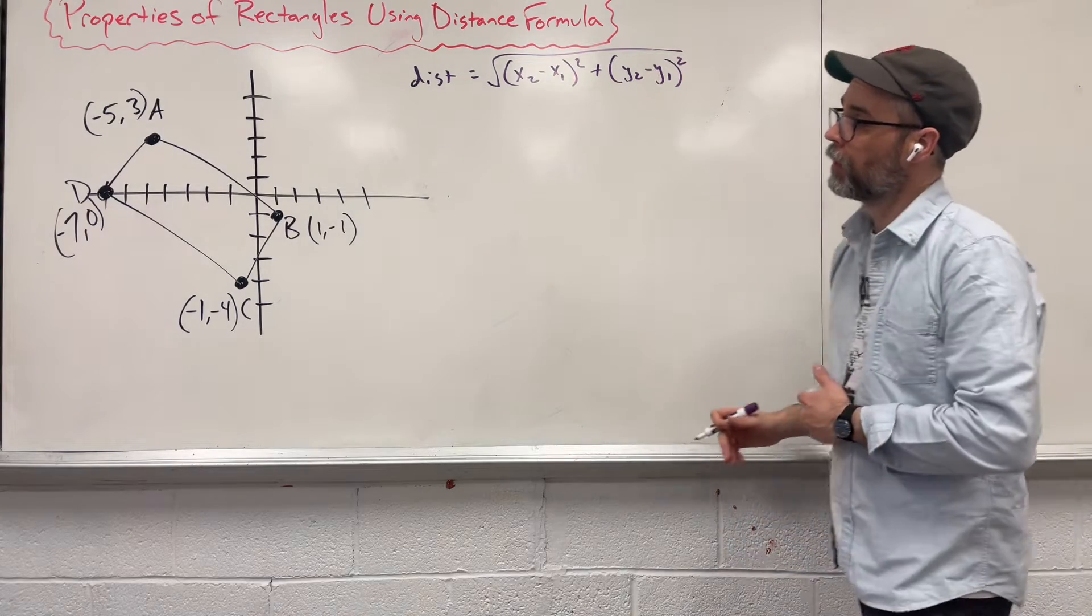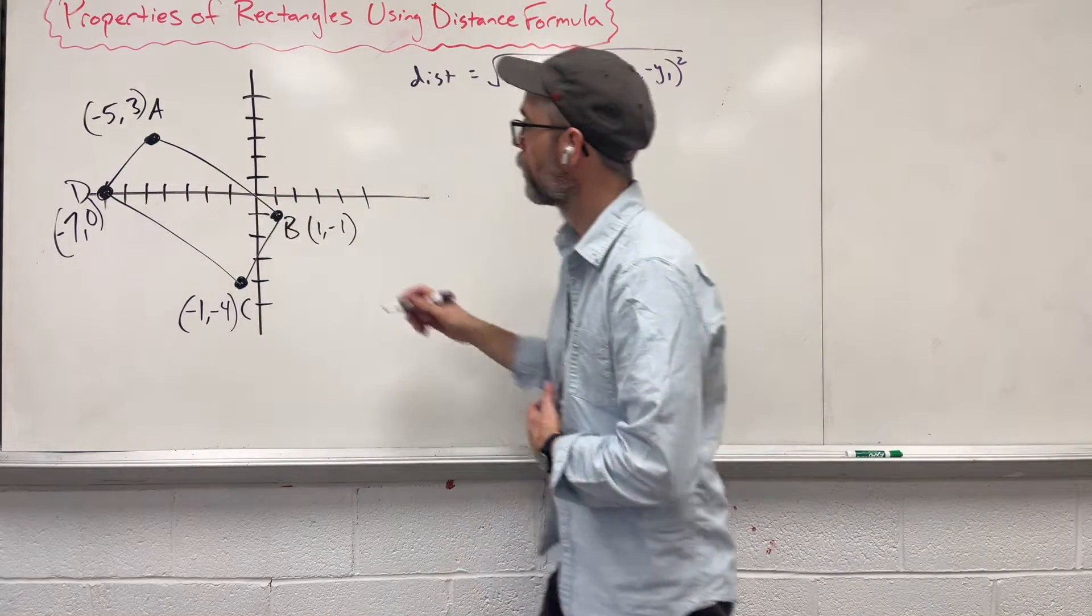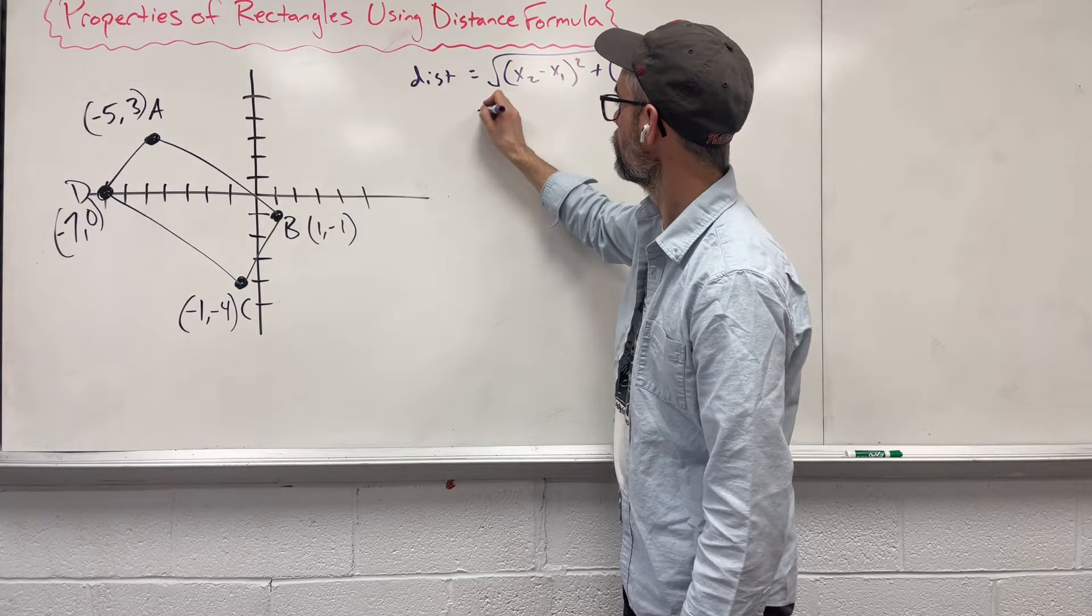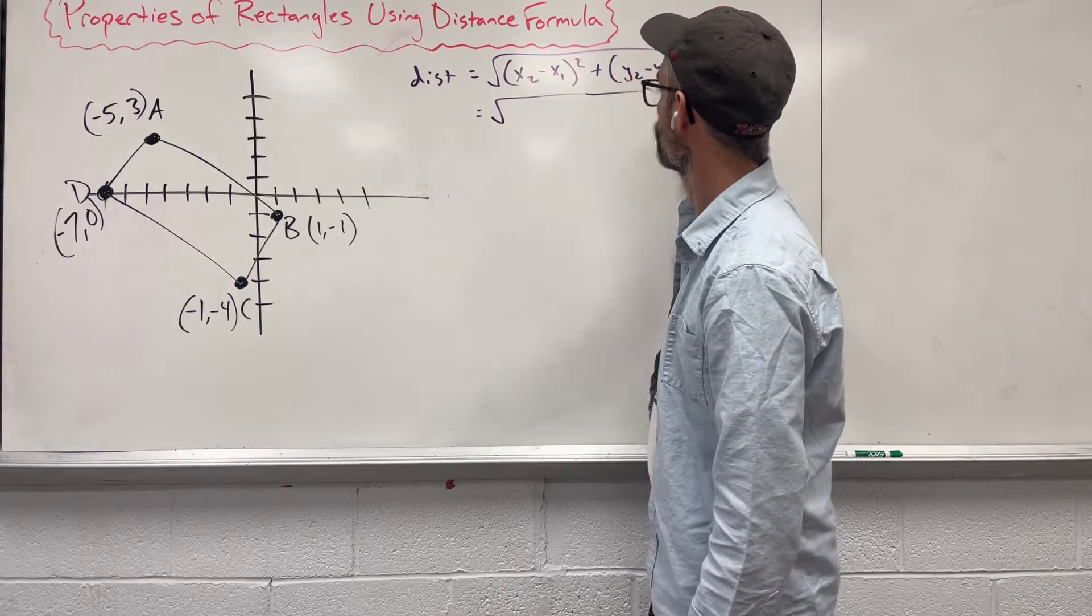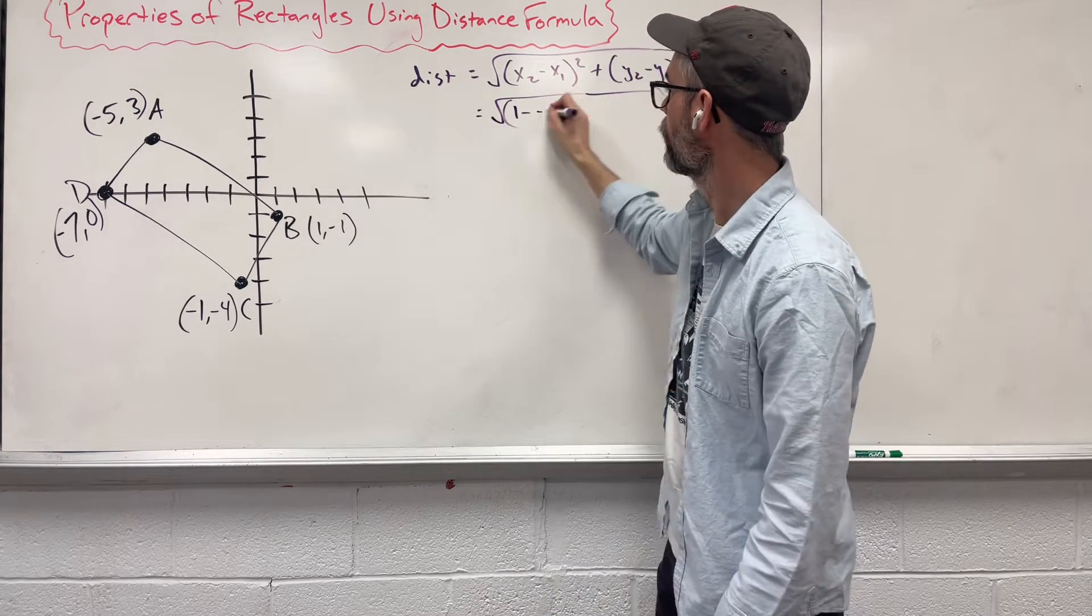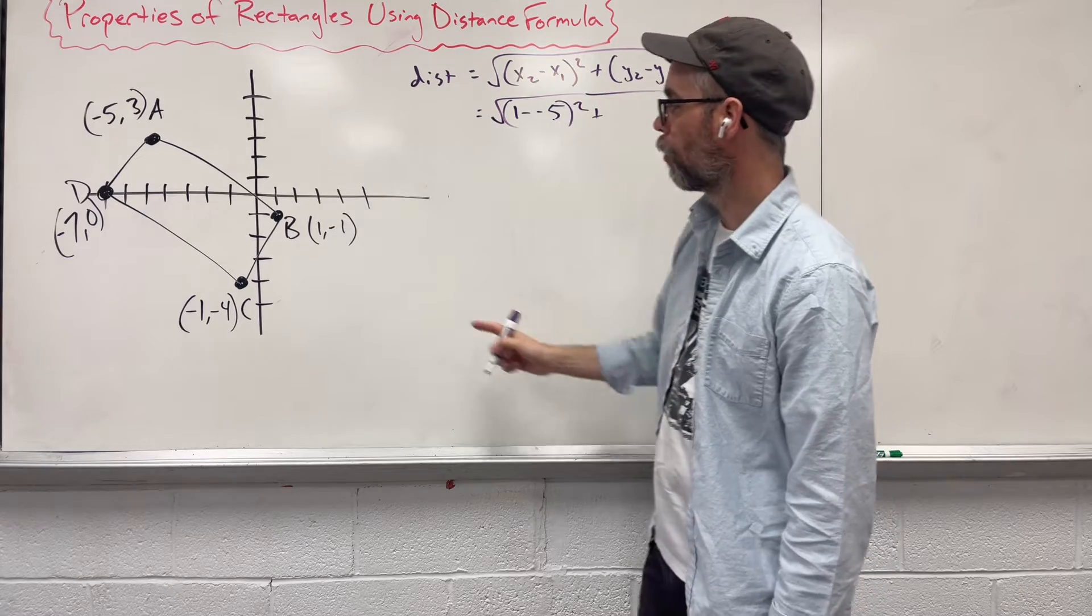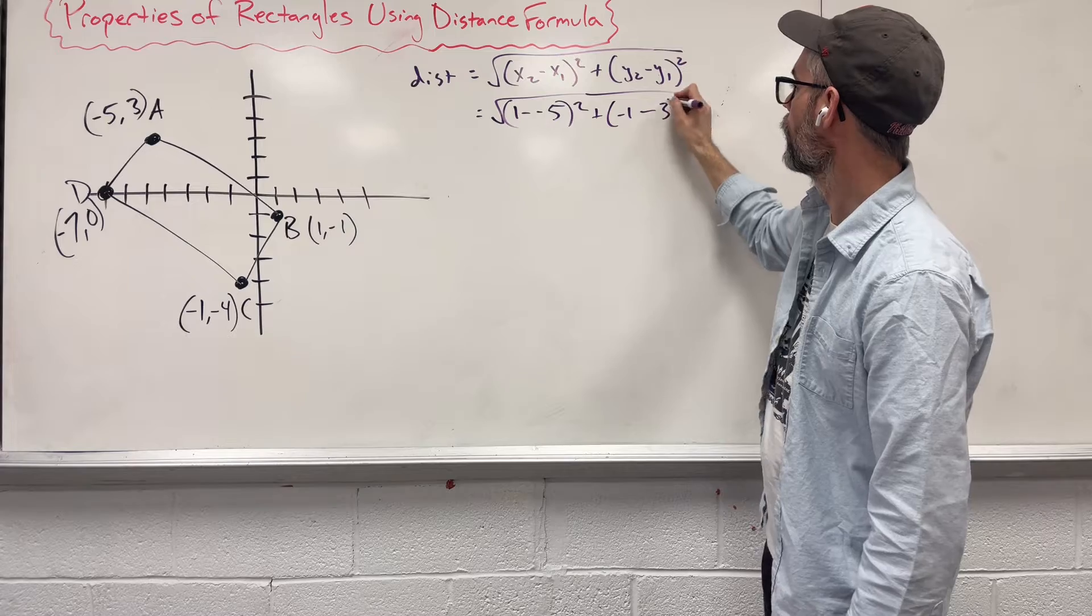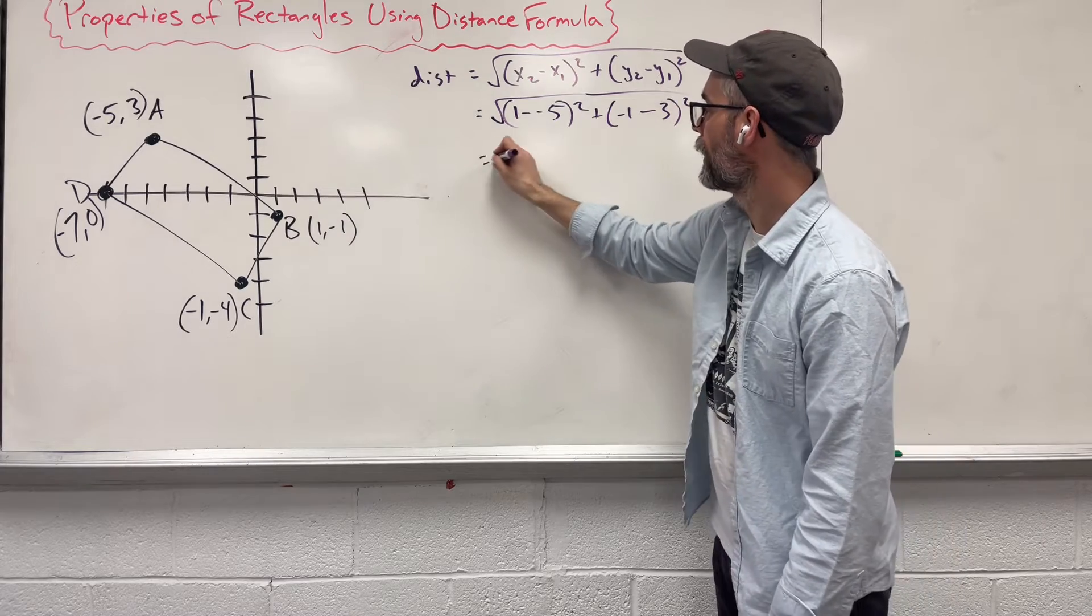Okay let's plug some numbers in, let's find what AB is going to be. So we're going to say our x is 1 minus negative 5, square it, and then our y's, negative 1 minus 3, square it. What do we get there?